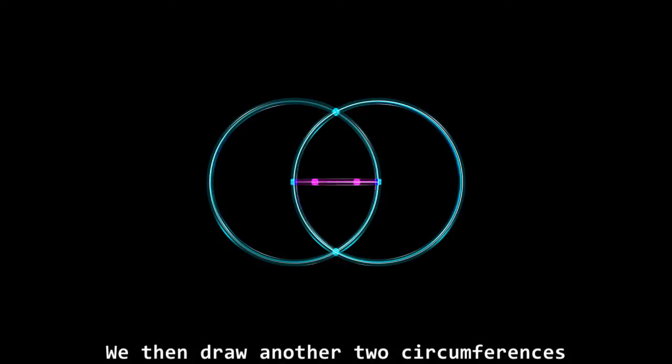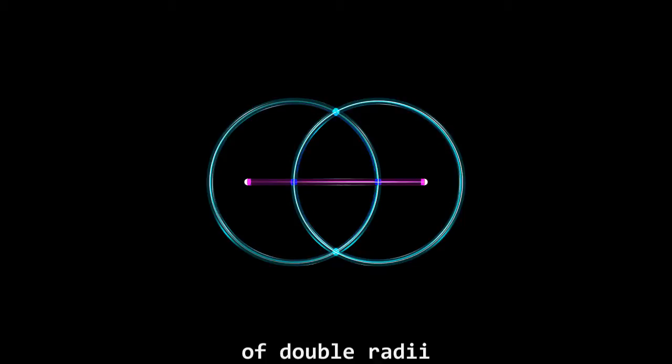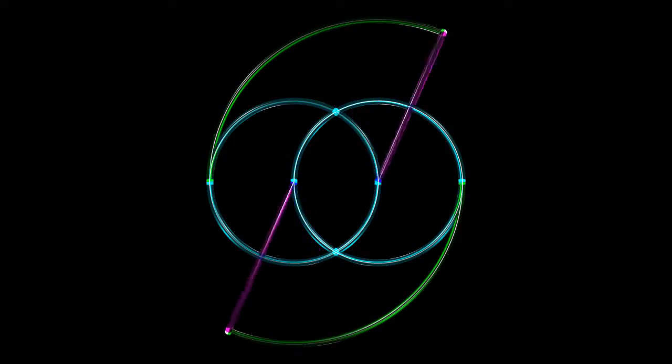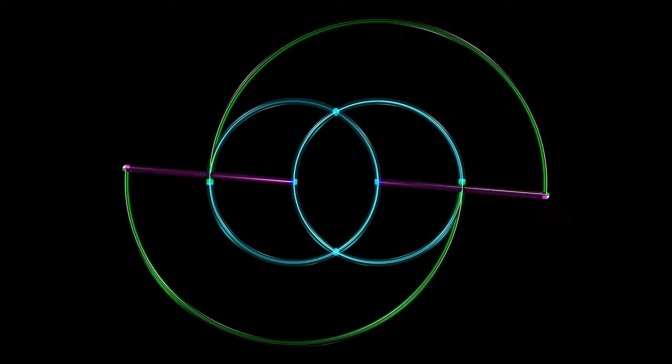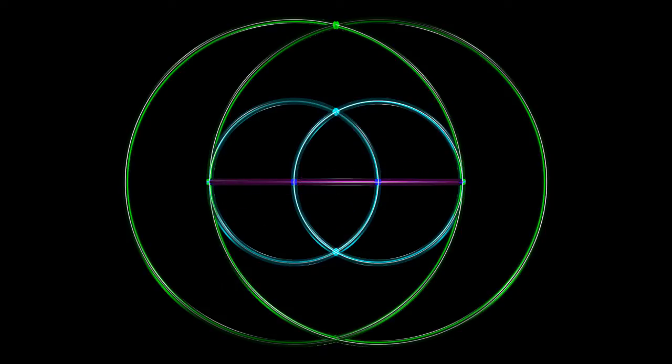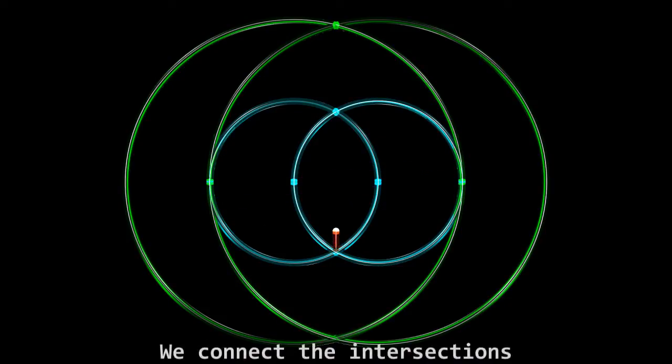We then draw another two circumferences of double radii from the center of the first two. We connect the intersections of the two small circumferences.